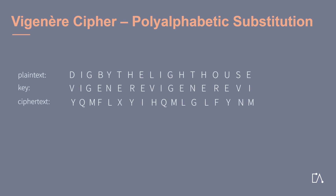Looking at our plaintext, key, and ciphertext, we notice the following: our plaintext contains the letter T two times. But since a different letter of our key is used to encrypt them, we have two different letters in our ciphertext, namely an X and a G. Hence, we substitute one plaintext letter with two different ciphertext letters, and therefore can speak of a poly-alphabetic substitution.